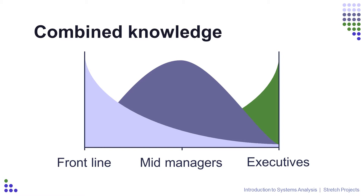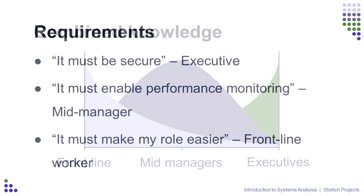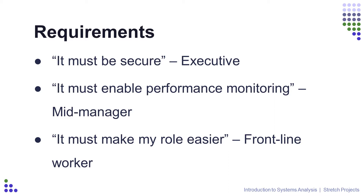After talking to various people about the system and what it's used for, certain functionality that a system must be able to do will begin to emerge, which becomes the requirements for a new system or enhancements you suggest in the future. An executive might tell you the company needs the system to be secure so that customer data can only be accessed under the correct circumstances. A mid-manager might tell you the system must record who is making changes, what changes are being made, and how often, so they can monitor staff productivity. A frontline worker might tell you the system must be easy to use and ultimately make their role easier, which probably means some sort of automation of the parts of the process that require a lot of time or don't add any real value.